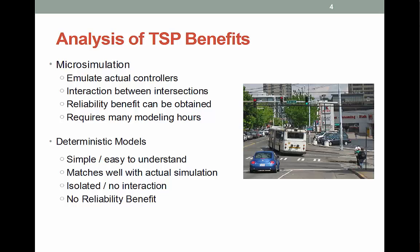Microsimulation models are expensive, and generally you only want to get an idea of what the benefits might be — where they could work best and which locations would make the most sense. This type of analysis can be done at a planning level through a deterministic model. Deterministic models are easy to build and understand, and research actually shows close correlation between deterministic models and simulation. However, there is no signal-to-signal interaction or any reliability benefits that you can obtain from these deterministic models.